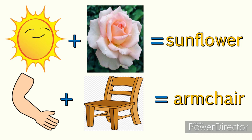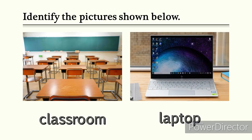Another example is arm plus chair. When combined, they become armchair. Arm is a part of our body, and chair is a piece of furniture for sitting, and when combined, they make a new word — armchair — with a different meaning. Other examples of compound words are classroom and laptop.